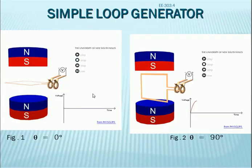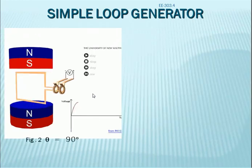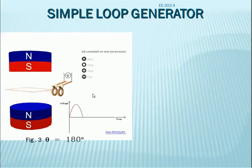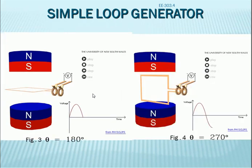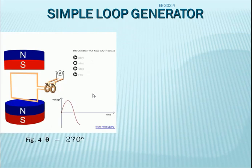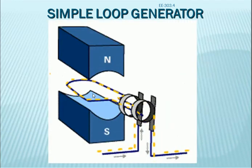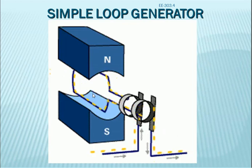In the simple loop generator: at 0 degrees, EMF is zero. At 90 degrees, maximum EMF generation occurs. Changing from 90 to 180 degrees, the EMF changes. At 270 degrees, the EMF is negative. This is the simple loop generator operation.